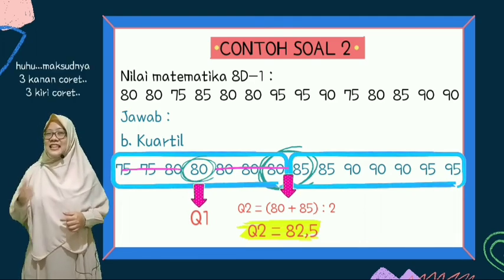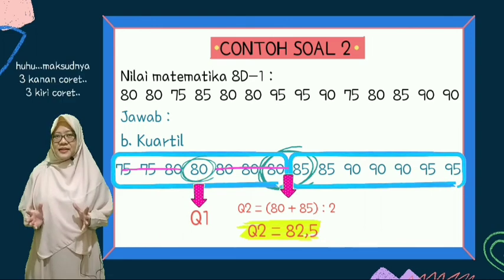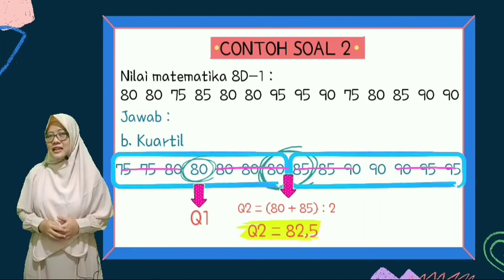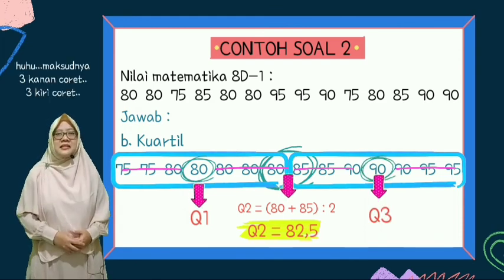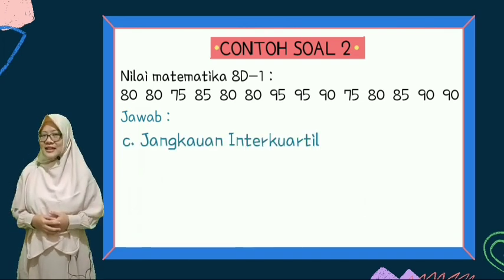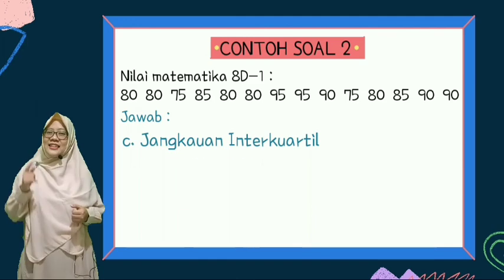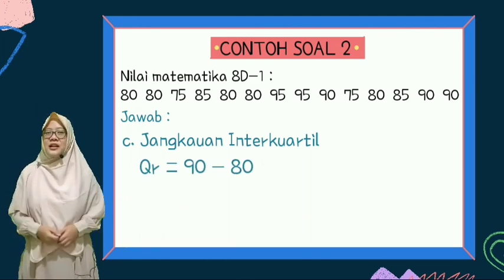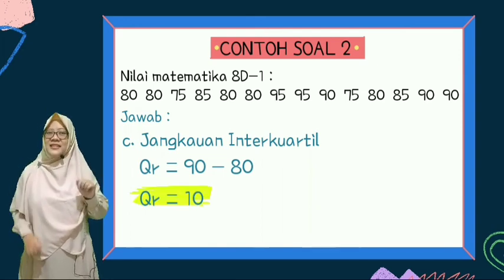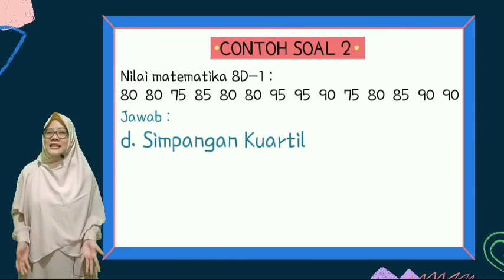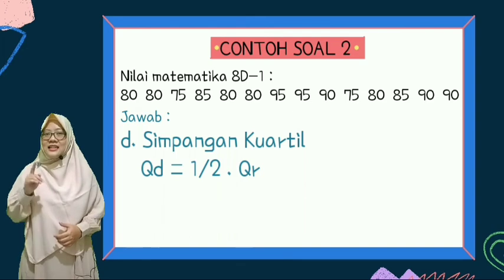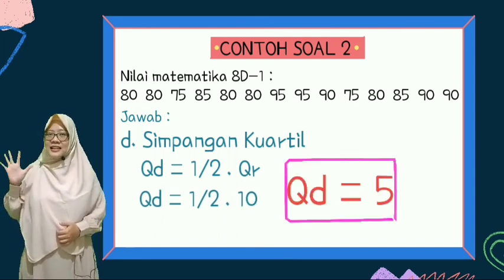Berikutnya kita akan mencari Q3. Q3-nya coret 4 kanan, coret 4 kiri. Ketemu hasilnya: Q3-nya adalah 90. Maka kalau kita mau mencari jangkauan interkuartil adalah Q3 - Q1, yaitu 90 - 80, hasilnya adalah 10. Terakhir, kita masuk ke simpangan kuartil. Tinggal dibagi 2 dari jangkauan interkuartil, jadi setengah dikali 10 sama dengan nilainya 5.